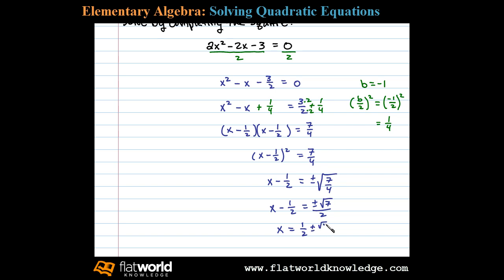Or we can write 1 plus or minus the square root of 7 over 2. These are the two solutions to the original equation.